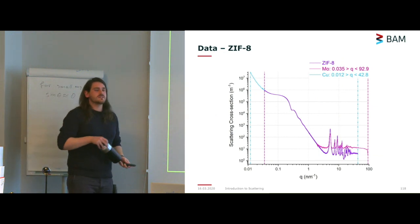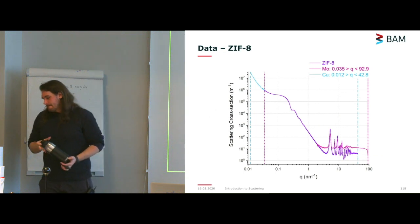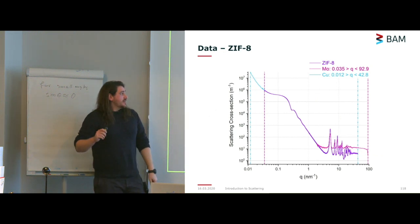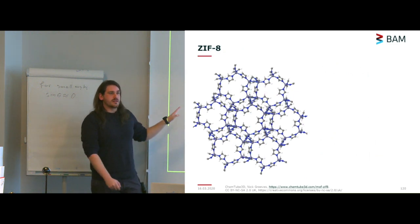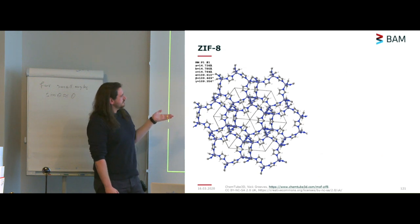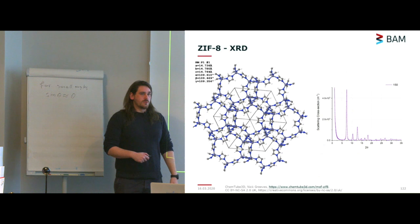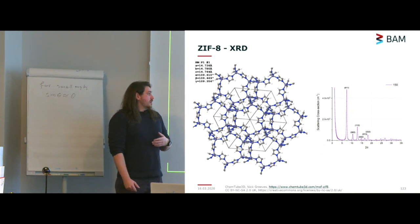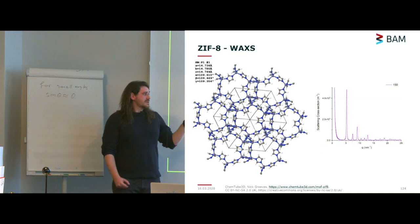Back to the data — we're going to look at the WAXS region first. This is ZIF-8, a crystalline material. This is its unit cell — it has lots of characteristic distances, and here is some XRD data from it. Many of you will be more familiar with diffraction data than with small and wide angle scattering. You can index the planes, which are essentially the periodic distances within the unit cell. This is the WAXS data we get. Here we have XRD data and WAXS data — the difference is one is in 2-theta and one is in Q. The data is essentially identical apart from the axis.